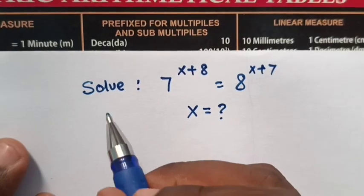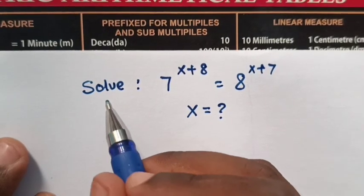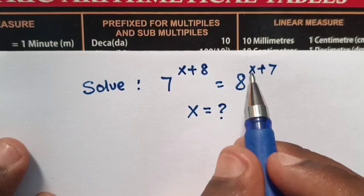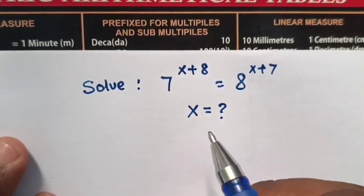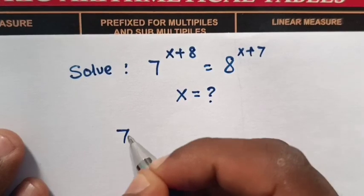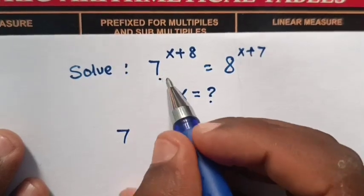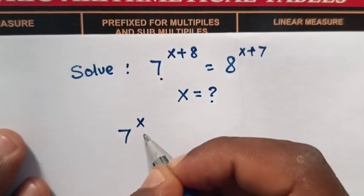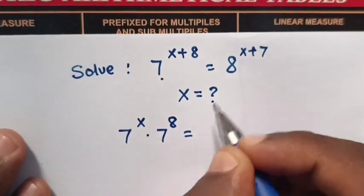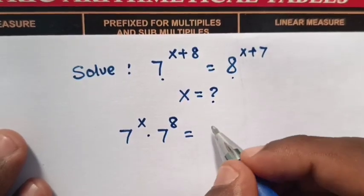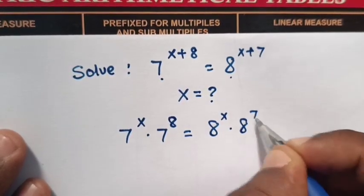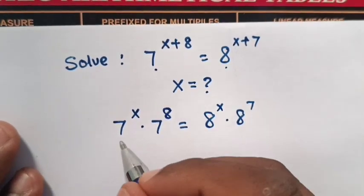Hello. To solve for 7 power (x plus 8) equals 8 power (x plus 7), find the value of x. From 7 power (x plus 8), this is the same as 7 power x times 7 power 8, which equals 8 power x times 8 power 7.